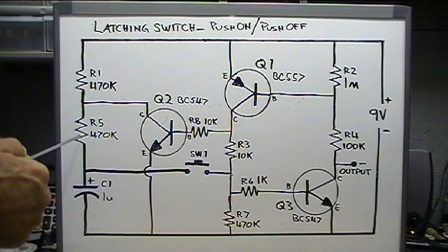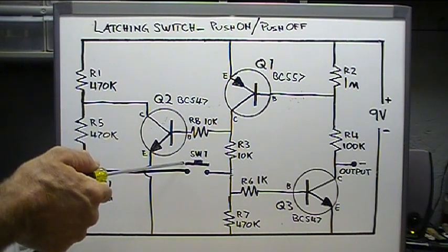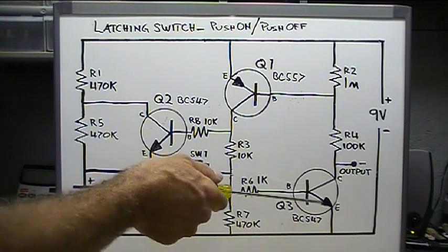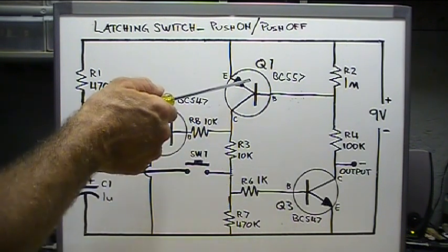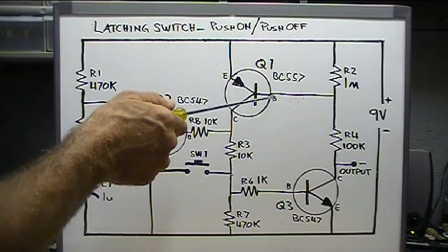When the circuit's first turned on, the capacitor here, C1, charges via these two 470K resistors. When the switch is pressed, the voltage on C1 is passed to Q3 to turn it on. This turns on Q1 here, and the voltage developed across R7 will keep Q1 turned on when the button is released.